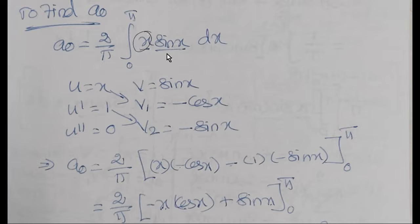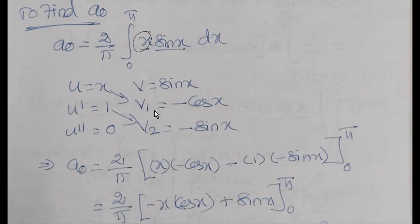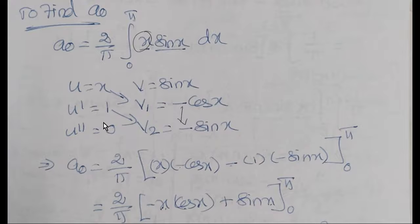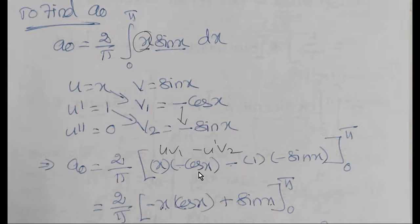With u = x and v = sin(x), we differentiate u to get u' = 1 and u'' = 0. Integrating v: v₁ = −cos(x), and v₂ = −sin(x). Applying the UV formula: uv₁ − u'v₂, we get x·(−cos x) − 1·(−sin x) = −x·cos(x) + sin(x), evaluated from 0 to π.